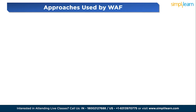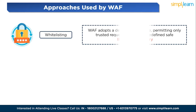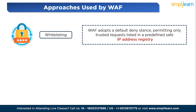WAFs employ various approaches to analyze and filter content within HTTP requests. The first methodology is whitelisting, where the WAF adopts a default deny stance, permitting only trusted requests listed in a predefined safe IP address registry. Whitelisting is more resource-efficient compared to blacklisting, but may inevitably block legitimate traffic due to its broad filtering approach. While it offers efficiency, precision may be compromised.